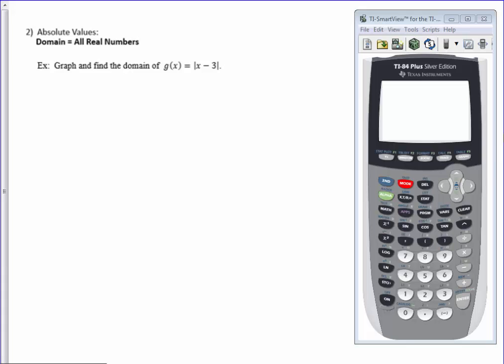It turns out that for an absolute value function, the domain is all real numbers. The way you will know it's absolute value is it will have the vertical bars around a piece of your function.